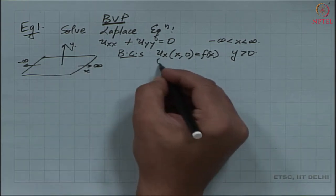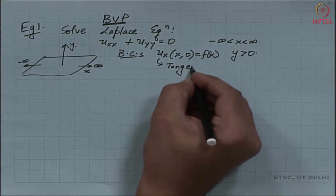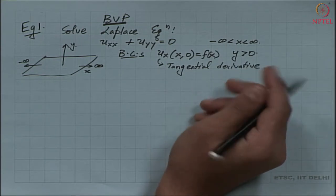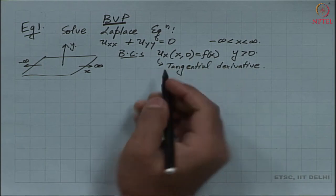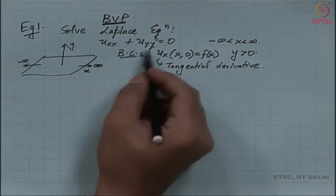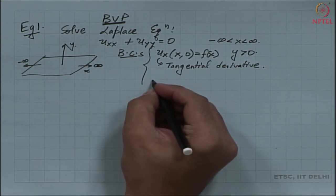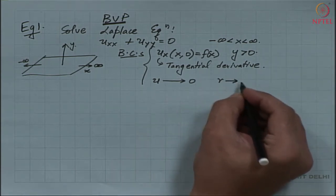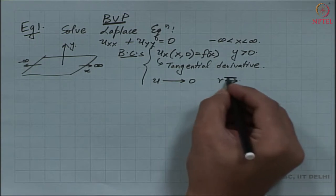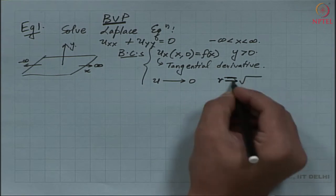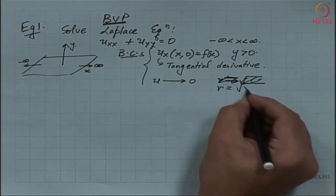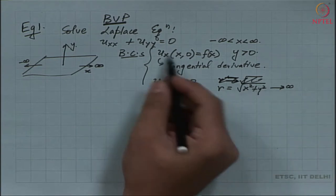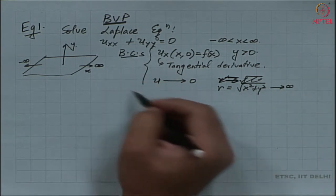The domain is infinite in one direction. Here u_x denotes the tangential derivative of the solution. The boundary conditions are: u(x, 0) = f(x), and a second boundary condition that u decays to 0 as the domain size R, defined by sqrt(x² + y²), goes to infinity. That is the complete description of the problem.